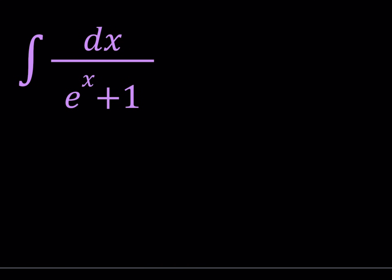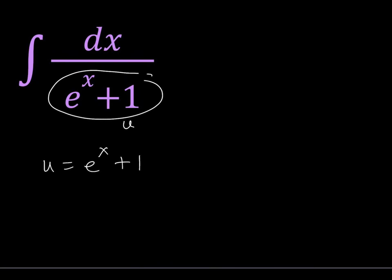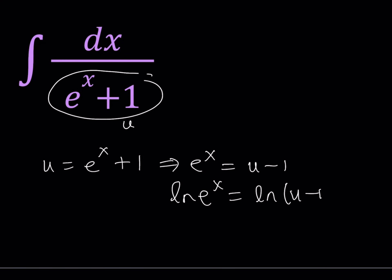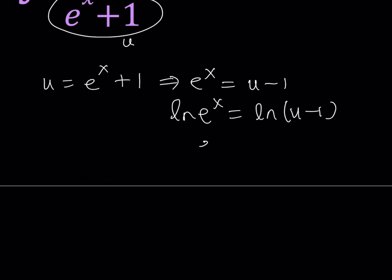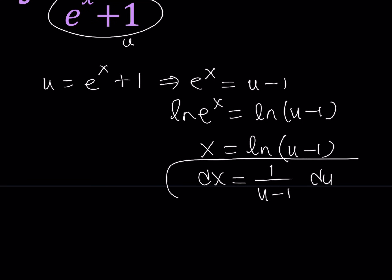The first method involves u-substitution. I'm going to call this expression u, so u equals e to the power x plus 1. My goal is to evaluate dx, but I don't have x by itself, so let's isolate e to the power x and then ln both sides. ln(eˣ) equals ln(u) minus 1, and since ln(eˣ) equals x, we get x equals ln(u minus 1). To find dx I differentiate both sides, giving me 1 over (u minus 1) du.